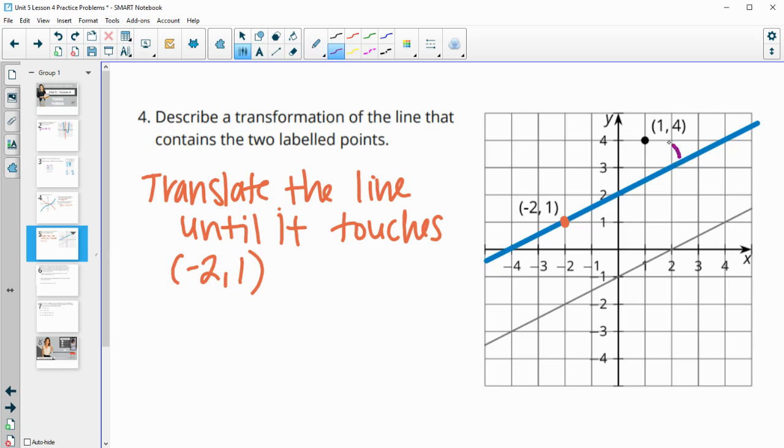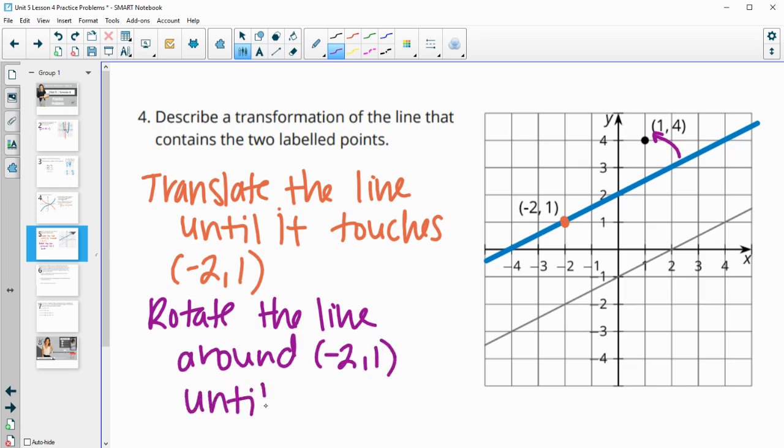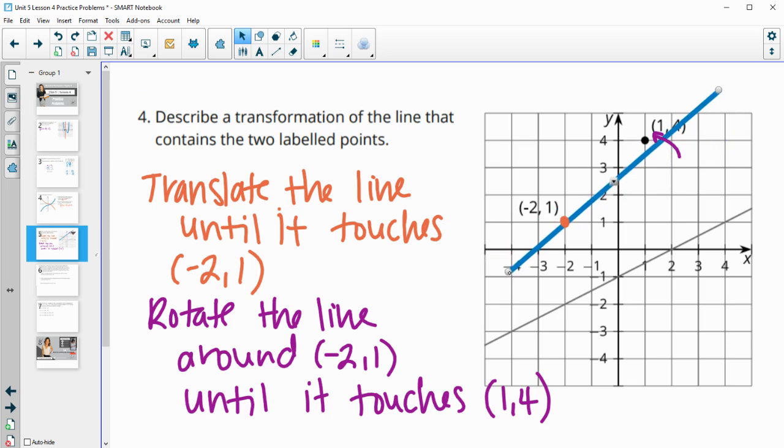So then rotate the line around the point that's set, around the point that we already have that we want. So around the point negative 2,1 until it touches or lands on the other point 1,4. So translate it until it touches the first point. Then rotate it around that point until it touches your second point. And so if you think rotating this, I can't get it to just stay there, but so that it you would just rotate it so it turns up.